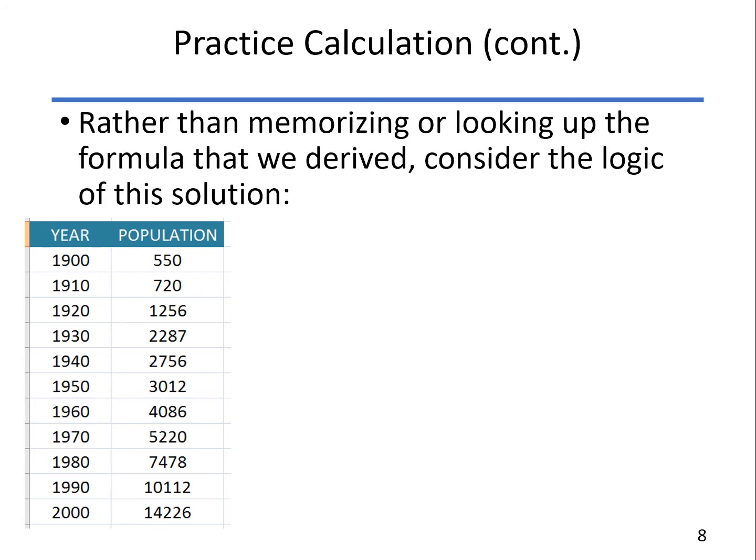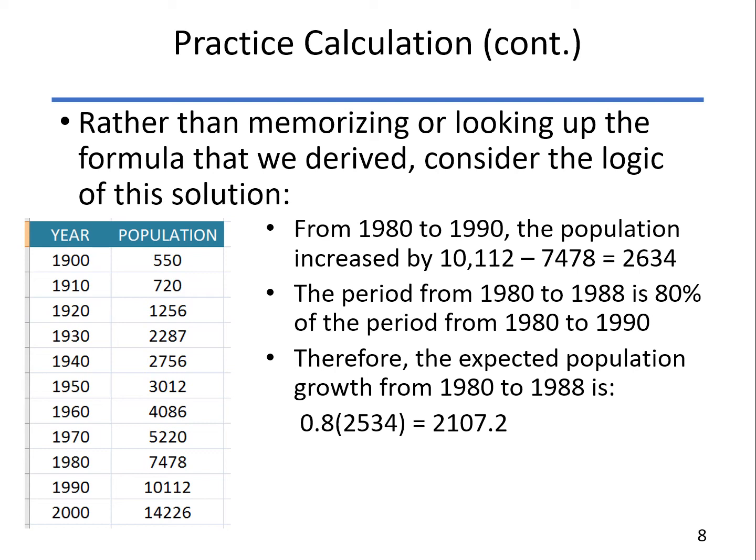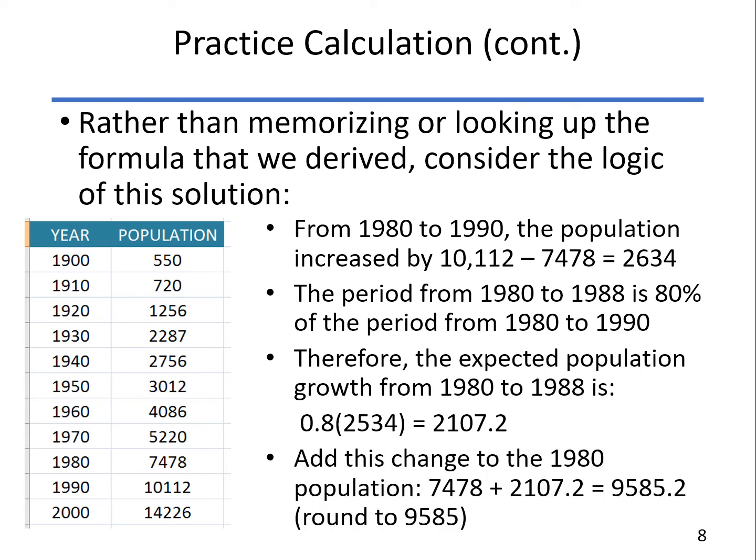Now, you don't really have to memorize that formula. Think about it this way. Let's look at the logic here. From 1980 to 1990, we had a population increase of 2,634. Now again, what we're assuming is that increase happens linearly. So from 1980 to 1988, that's 80% of the period where that population change took place. So if I simply multiply 0.8 times the population change, we come up with the population growth that took place during those eight years, which is estimated as 2107. Then we simply add that to the population in 1980 and come up with our estimate, 9585.